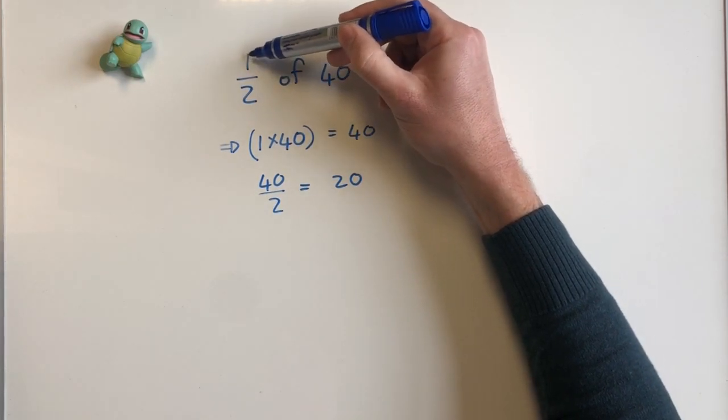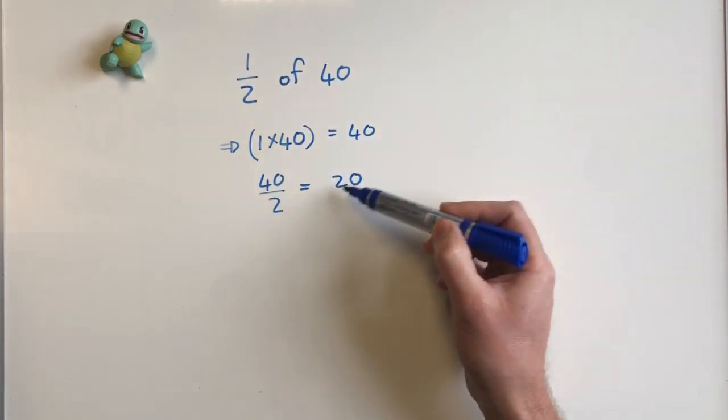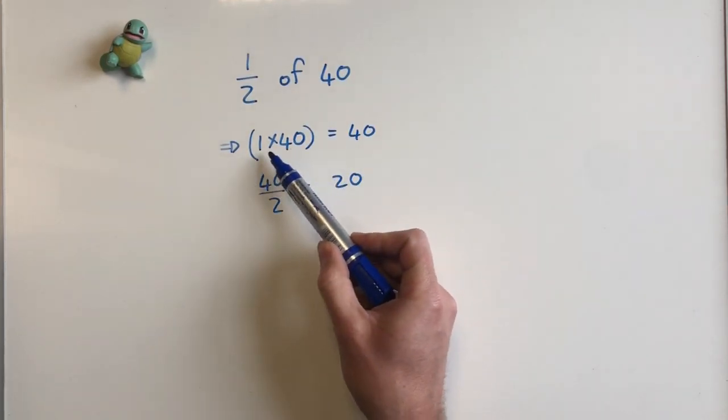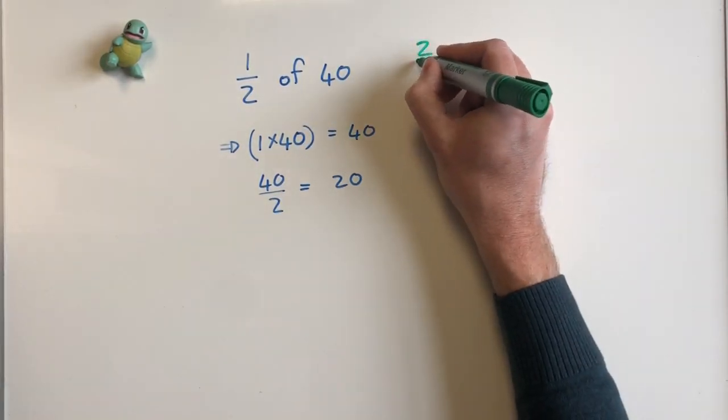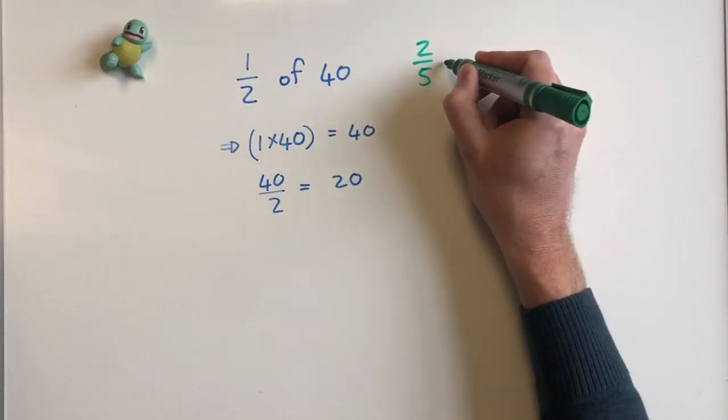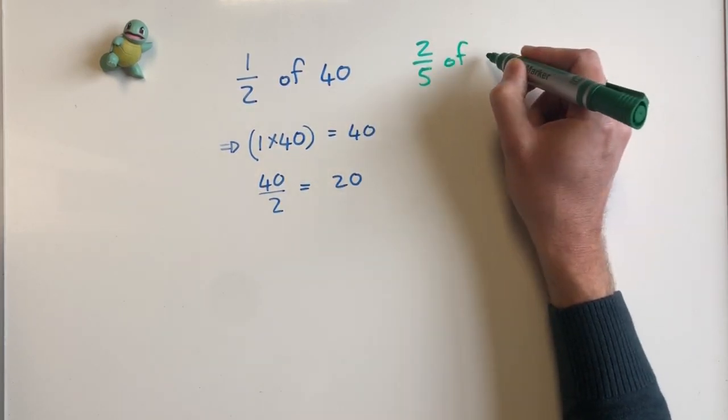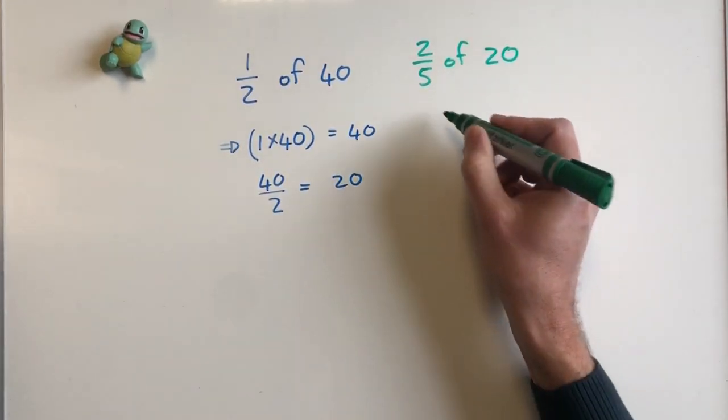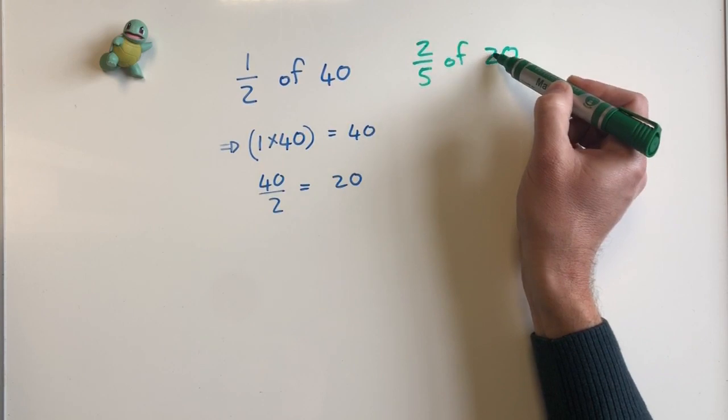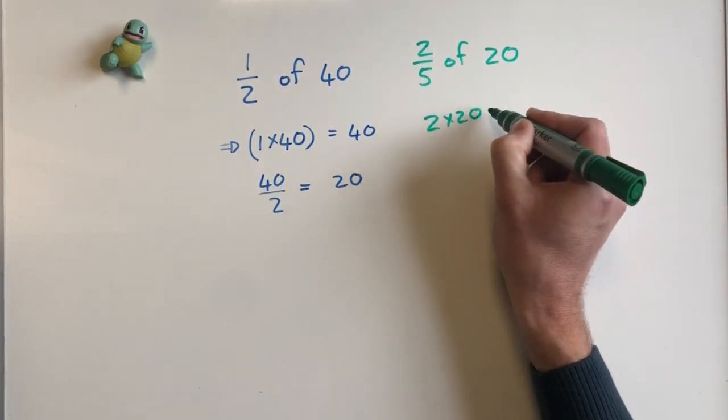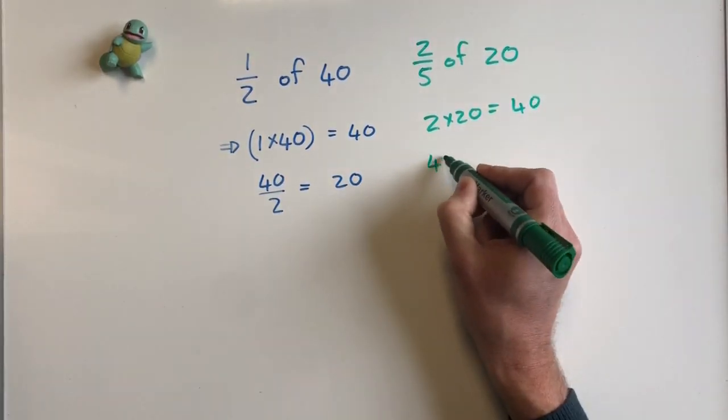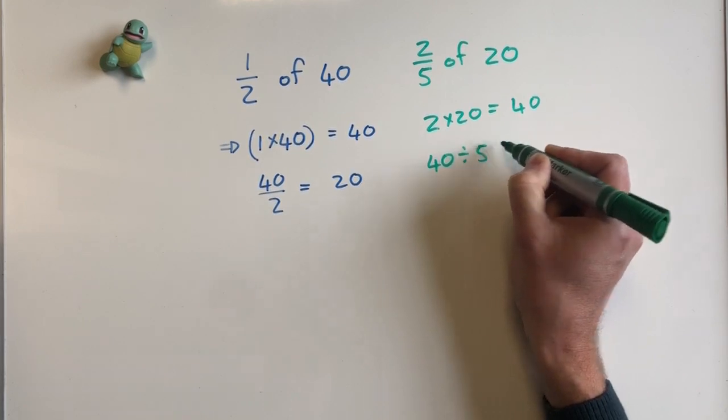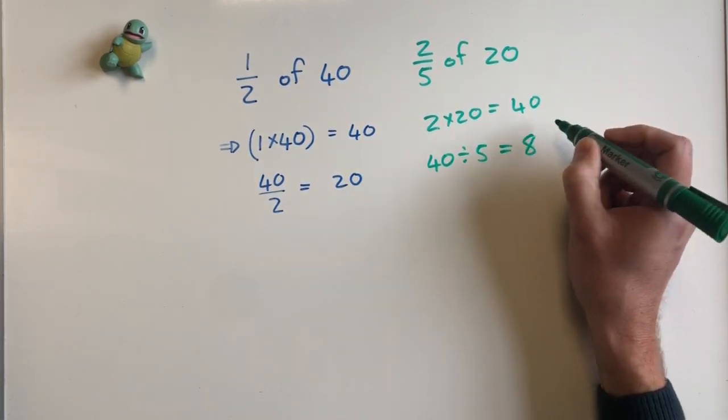This is a unit fraction meaning there's only one at the top and a specific number at the bottom, so it's obviously easy. But if we had something more difficult, let's say we had two-fifths of 20, how we would work that out is we would say 2 times 20, which gives us 40.